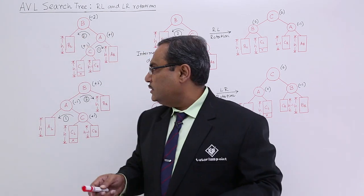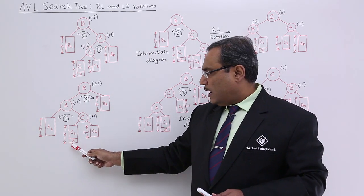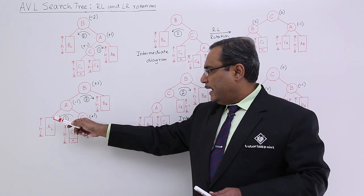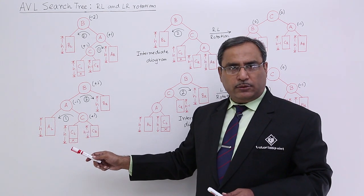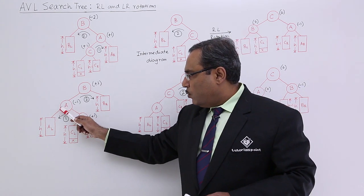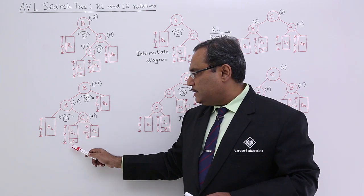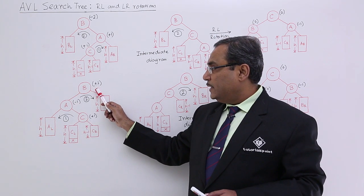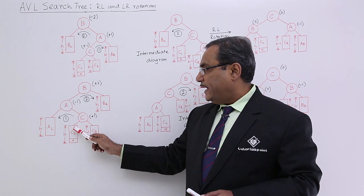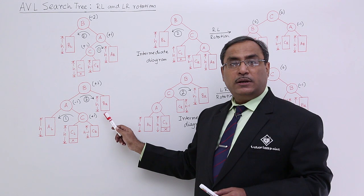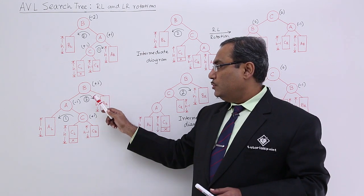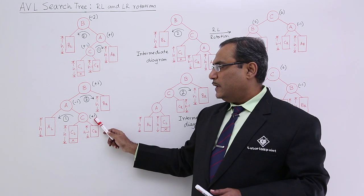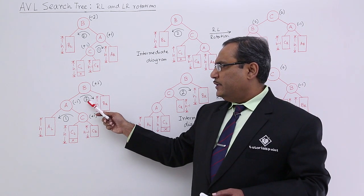Now let me go for the last one: LR rotation. This is the initial state after insertion of element X — the shape is now like this. Calculate the balance factors; other heights can be seen directly from the diagram. This one: 1 plus H is H plus 1, and 1 plus 1 plus H is H plus 2. So H plus 1 minus H plus 2 gives minus 1. What about the root? It is 1 plus 1 plus 1 plus H, so H plus 3, and this is 1 plus H, so H plus 1. H plus 3 minus H plus 1 gives plus 2. For B it is H plus 1 minus H giving plus 1. It is requiring a rotation.